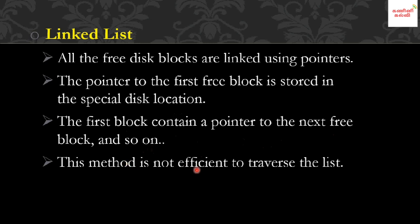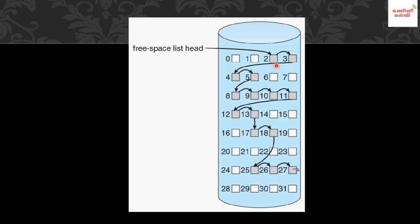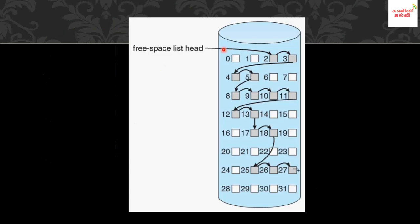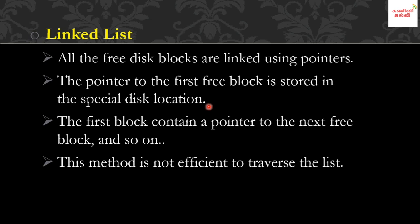The second block contains a pointer to the third, and so on. This method is not efficient to traverse the list. For example, in the diagram, blocks 2, 3, 4, 5 are free. The first free block is block 2, stored in the special location. Next free block is 3, then 4, then 5, then 8. The last free block's pointer is null.